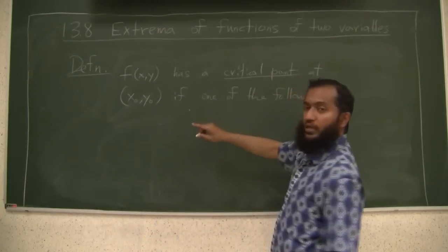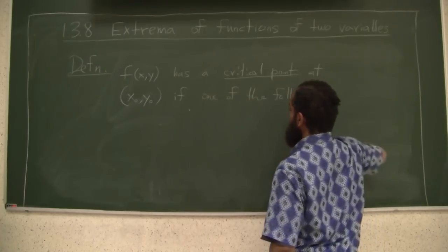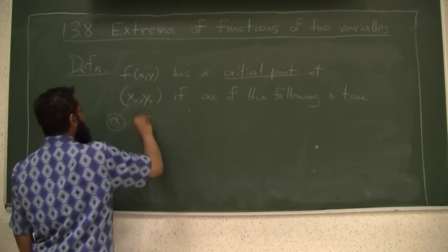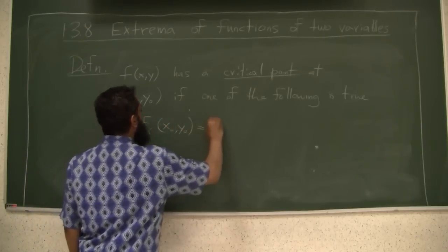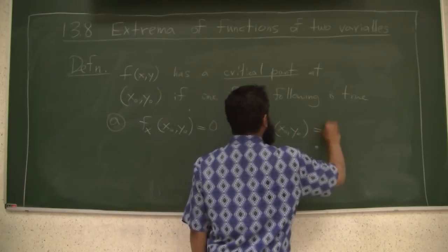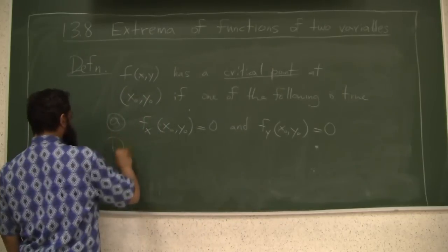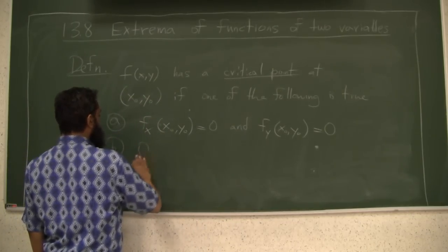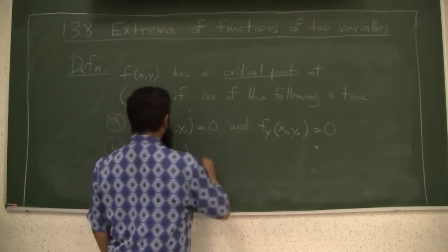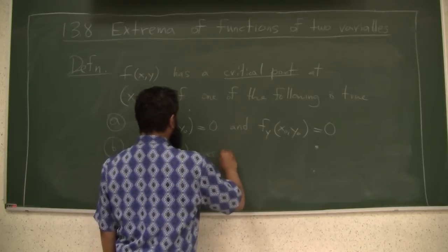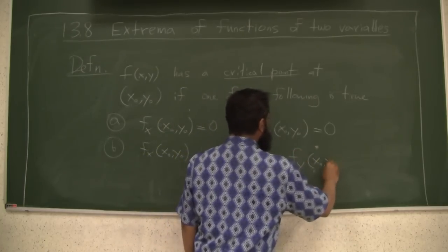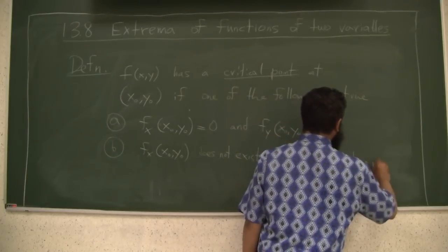So we say x0, y0 would be called a critical point for f, a function of two variables, if one of the following is true. So either you have f sub x at x0, y0 equals 0 and f sub y at x0, y0 equals 0, or f sub x at x0, y0 does not exist or f sub y of x0, y0 does not exist.